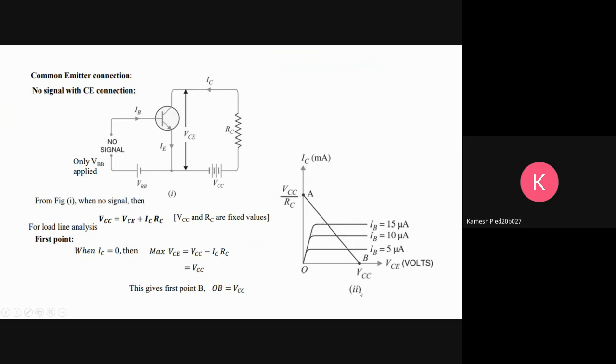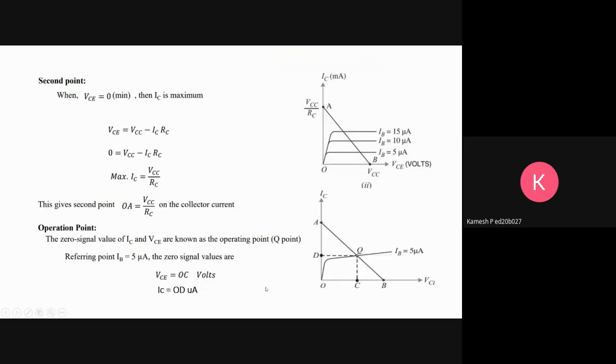Finding the first point: when IC is equal to zero, you will get that VCE is equal to VCC, which is the maximum value that can be formed by VCE. So that gives the first point.